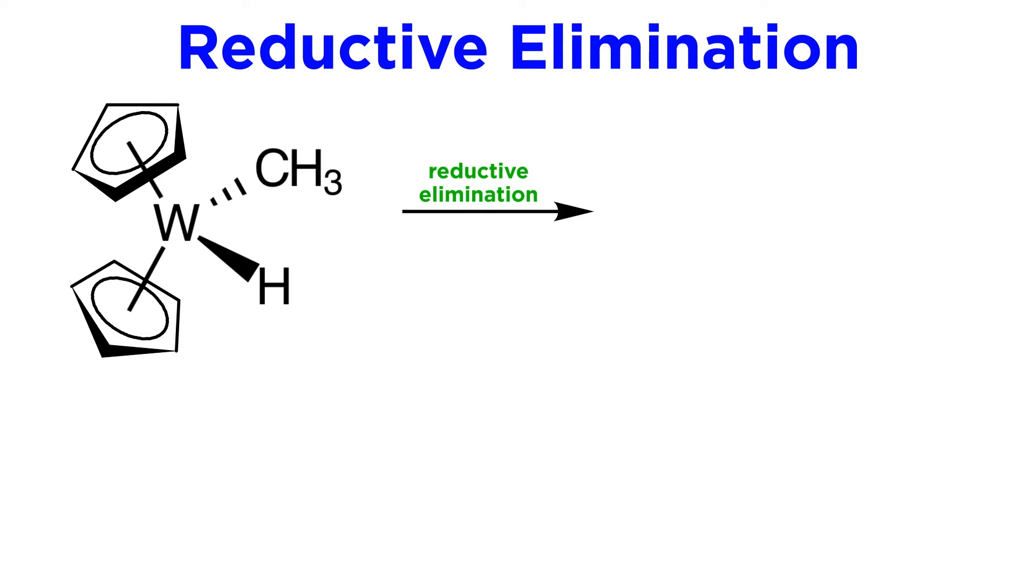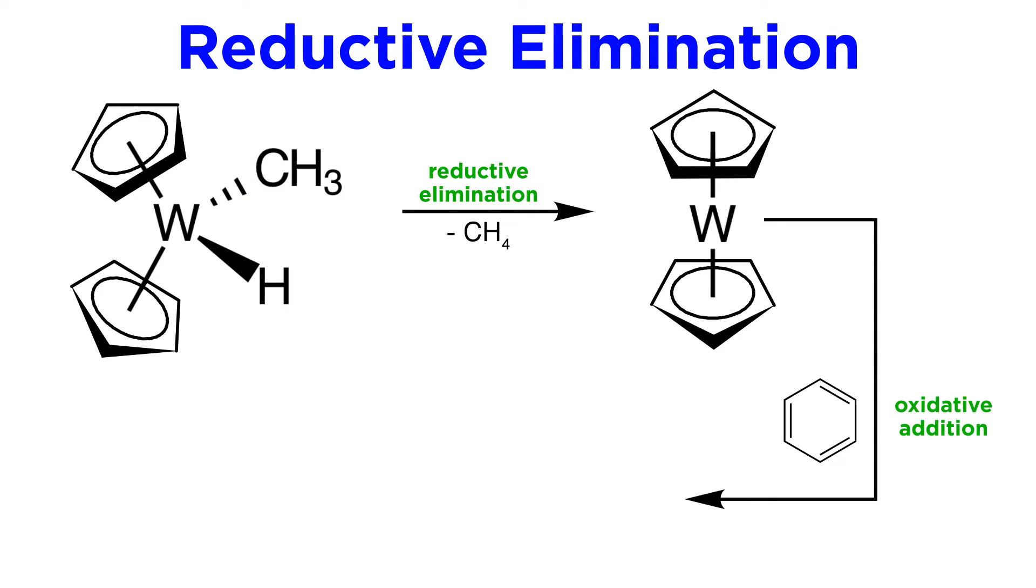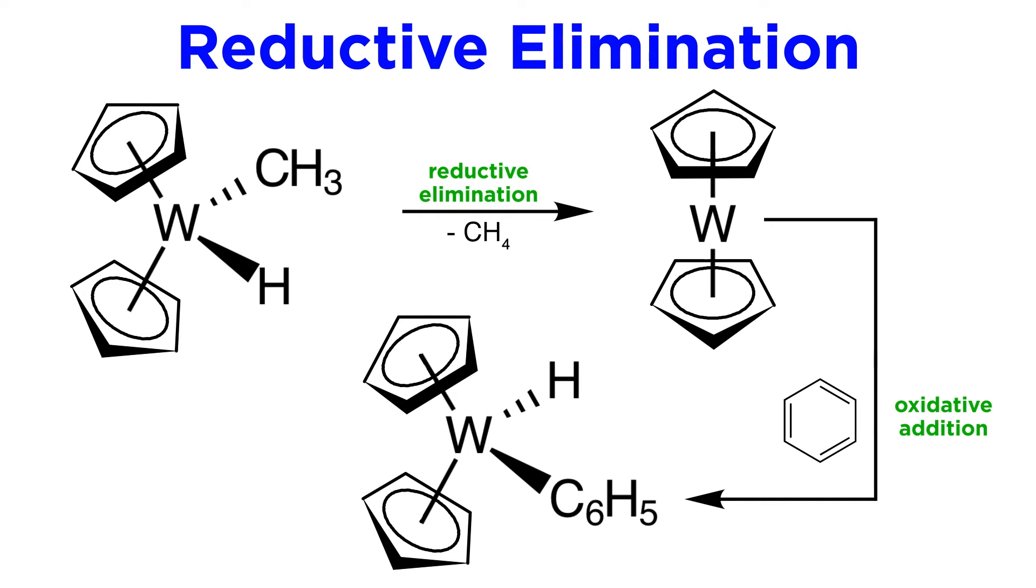But this complex is capable of reductive elimination. The methanide and hydride ligands can leave as methane, and then there will be open sites for benzene to undergo oxidative addition, leaving the phenyl ligand and a new hydride ligand. So again, we will often see reductive elimination in conjunction with other reactions.